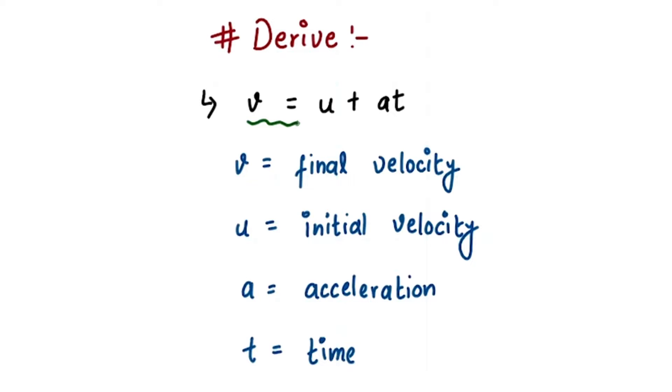To derive this particular equation, all you need to know is one formula, and that formula is the formula of acceleration, which is a equals to v minus u divided by t. So acceleration is change in velocity per unit time. If you know this particular formula, then we can easily derive that equation.